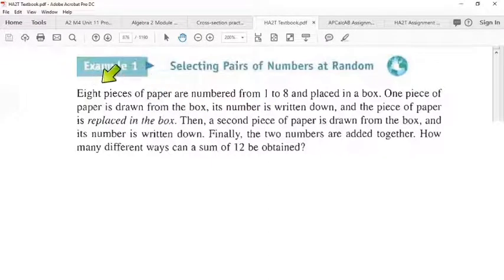Okay, let's read it. Eight pieces of paper are numbered from 1 to 8 and placed in a box. One piece of paper is drawn from the box, its number written down, and the piece of paper is then replaced in the box. Then a second piece of paper is drawn from the box and its number is written down. Finally, the two numbers are added together. How many different ways can the sum of 12 be attained?